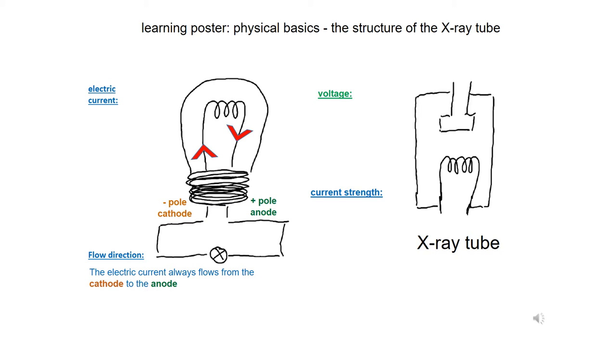Electric current is the flow of electric charges or the movement of electrons. From the very thin filament of the light bulb, some electrons leave the filament. This is visible to us as visible warm white light.